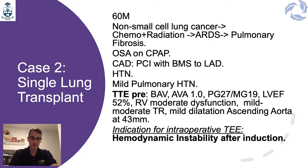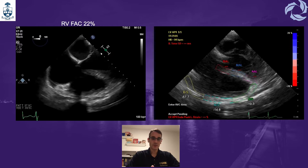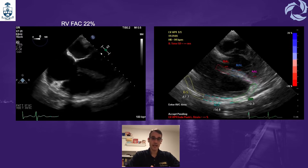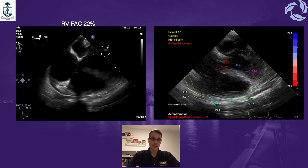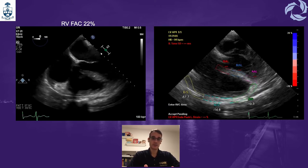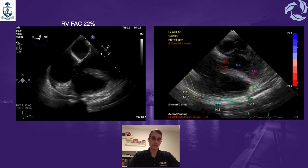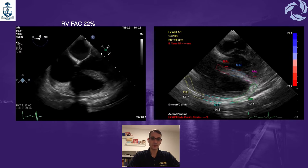The surgeons wanted to proceed straight to ECMO for the transplant, so the decision was not to perform TEE unless necessary. Unfortunately, after induction the patient became extremely hemodynamically unstable. In a situation with pulmonary hypertension and hypotension, we always need to assess the performance of the right ventricle. We tilted the probe from a mid-esophageal four-chamber view into a modified four-chamber view to expose the right ventricle.